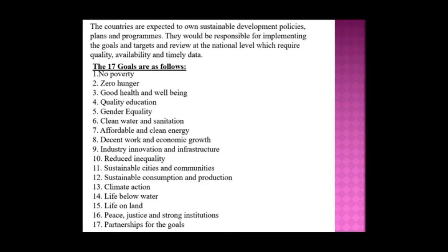The 17 Sustainable Development Goals are: 1) No Poverty, 2) Zero Hunger, 3) Good Health and Well-being, 4) Quality Education, 5) Gender Equality, 6) Clean Water and Sanitation, 7) Affordable and Clean Energy, 8) Decent Work and Economic Growth, and 9) Industry, Innovation and Infrastructure.